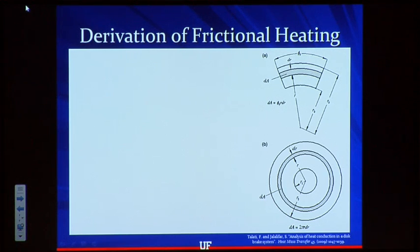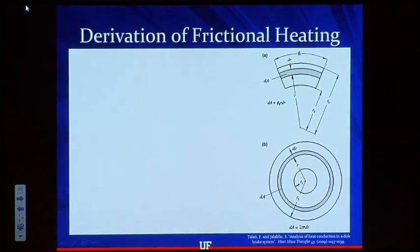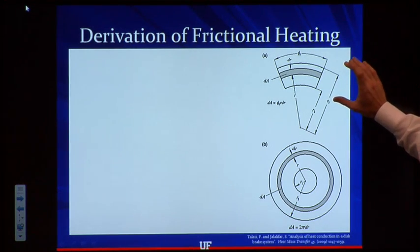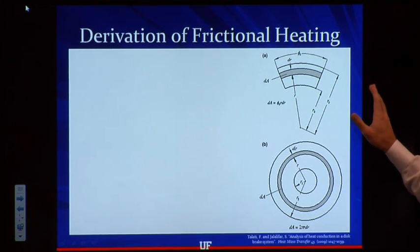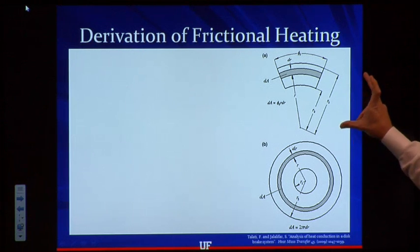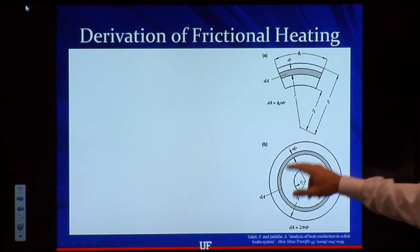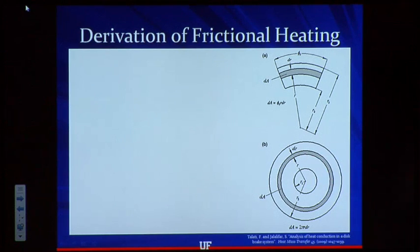Let's go through a quick derivation of frictional heating. This is not covered particularly well in Shigley, so I wanted to make sure to go through this carefully. What we're going to have is the same setup we had before. Up top here, we have our brake pad that's annular in shape with an inner and outer radius, and then we have our disk of radius capital R.